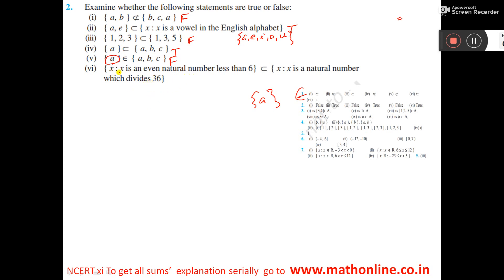So now this one, right side, even natural number less than 6. So it will be 2, 4. 2 and 4. Even natural, so it will be 2 and 4. And right side it is, what is coming?